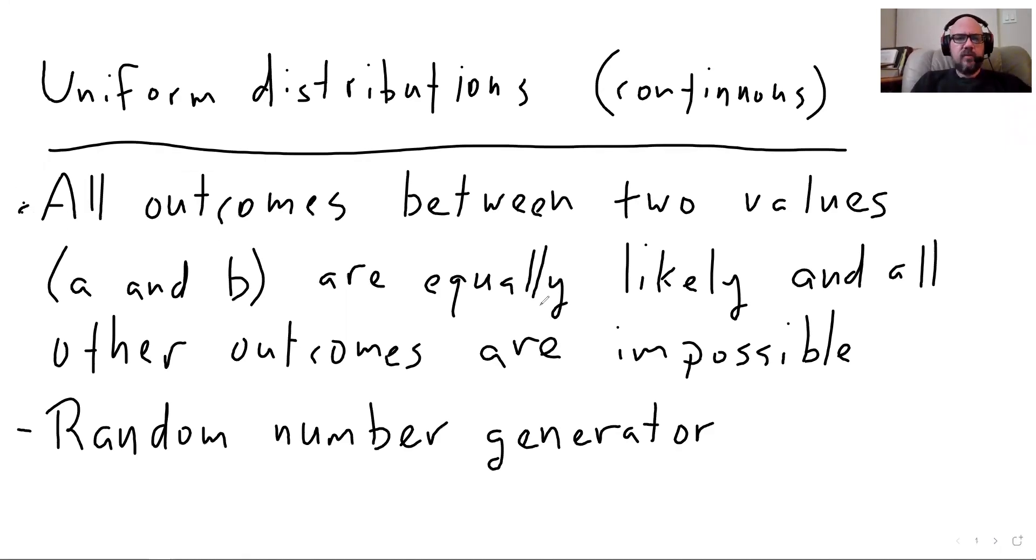Here is the basic idea of uniform distributions. Just like discrete uniform distributions, all the outcomes between two values are equally likely. In this case, when we say all outcomes are equally likely, we don't mean just the integer outcomes, we mean all of them.